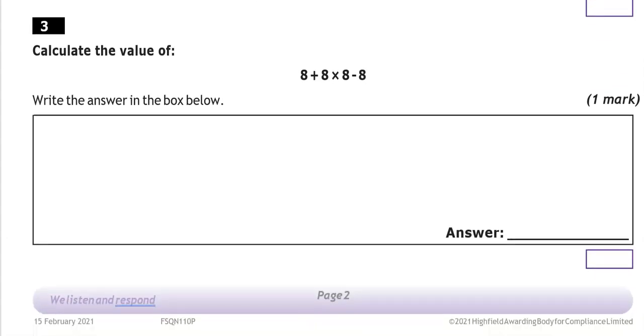Calculate the value of 8 + 8 × 8 - 8. Write the answer in the box below. So we know through BIDMAS that we need to do multiplication first. So we're going to do this first. So I'm going to rewrite this as 8 + (8 × 8 is 64) - 8.